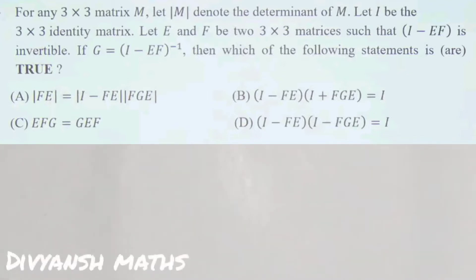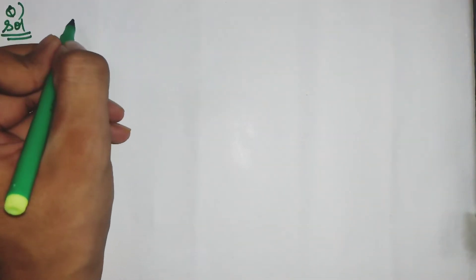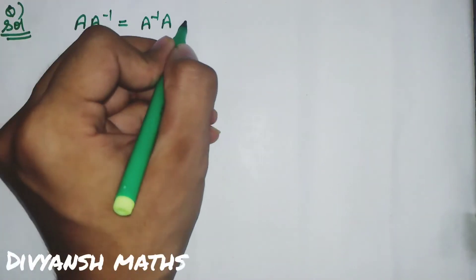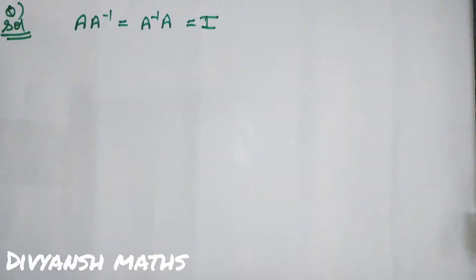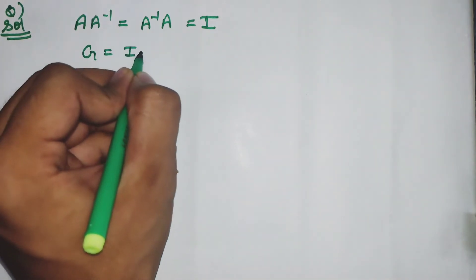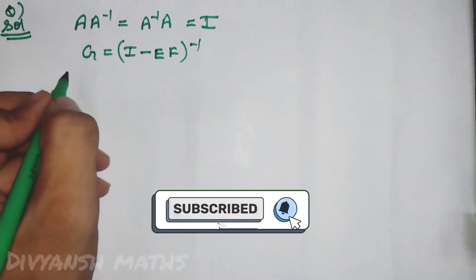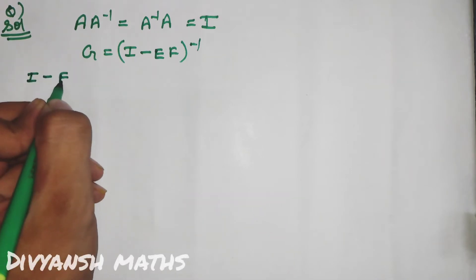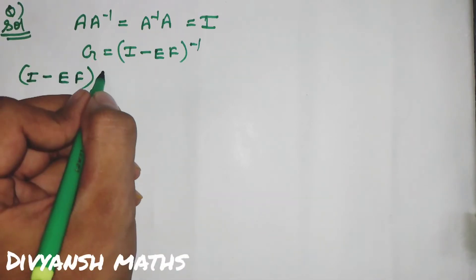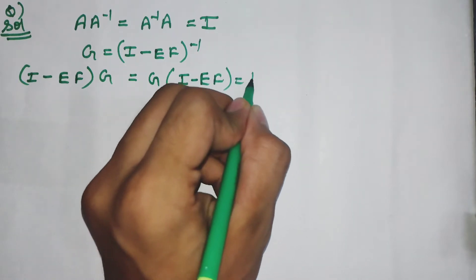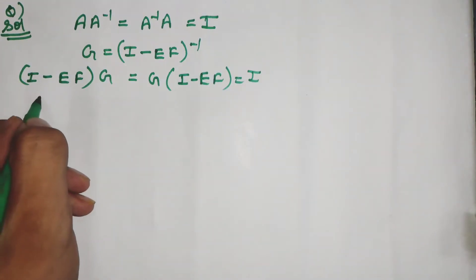Statement आपके सामने दिख रखे हैं। Question दिखने में काफी बड़ा है पर इतना जादा नहीं है। एक inverse की property होती है: A·A⁻¹ = A⁻¹·A = identity matrix. Given है कि G = (I minus EF)⁻¹, तो यहां से हम लिख सकते हैं: (I minus EF)·G = G·(I minus EF) = identity matrix.